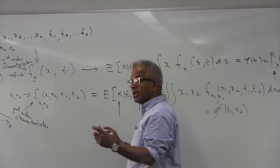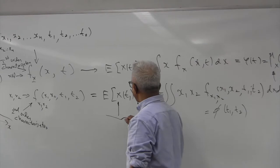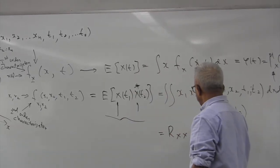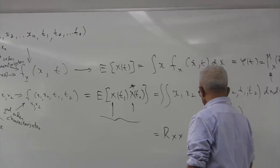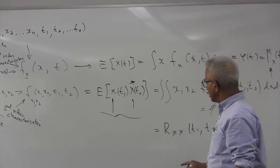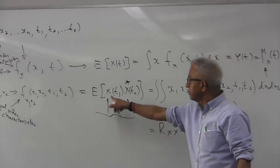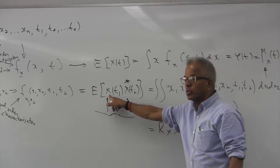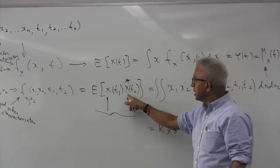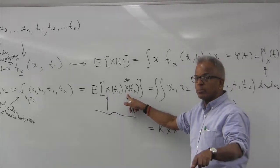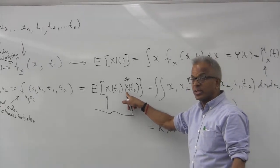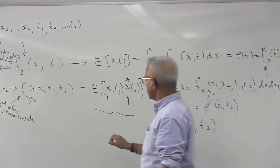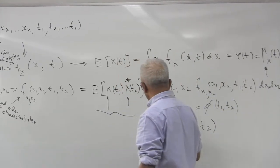This is from time instant t1 and this is from time instant t2 — the same process. We call this function the autocorrelation function. The notation used is capital R with subscript xx, where xx means you are dealing with the same process. This is the value of the random process at time instant t1 multiplied by the value of the same random process at t2 — not another process. Because it is the same process, we call it auto, so this is the autocorrelation function.